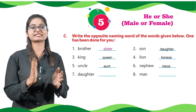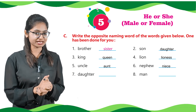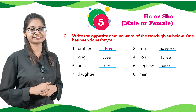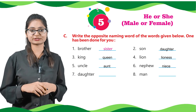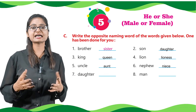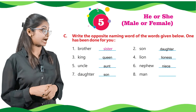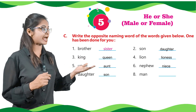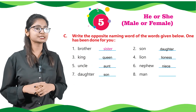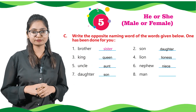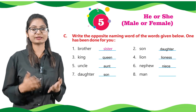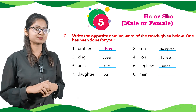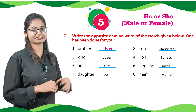Let's go to number seven. We have given daughter — the opposite word for daughter is son. Last but not the least, we have given man — the opposite word for man is woman.